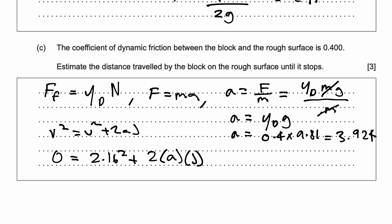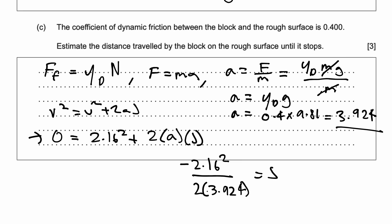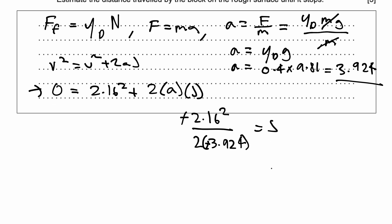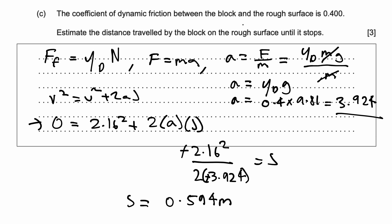Plugging that into the SUVAT equation: s equals negative 2.16 squared divided by 2 times 3.924. The negatives cancel, so s is a positive displacement. Putting this on the calculator, s comes out to be 0.594 meters. That's how far the block travels on this rough surface when hit by the ball, under a coefficient of dynamic friction of 0.4.